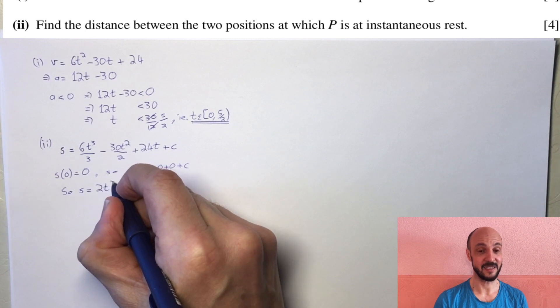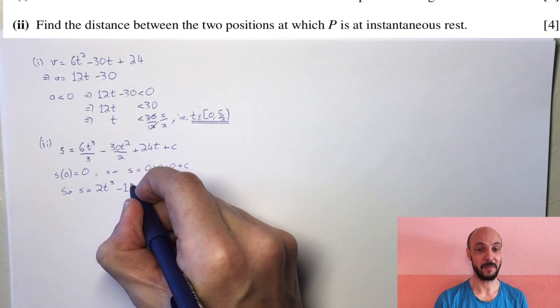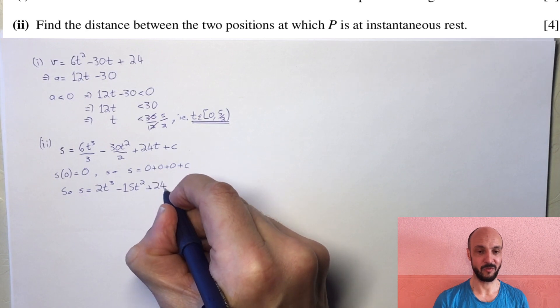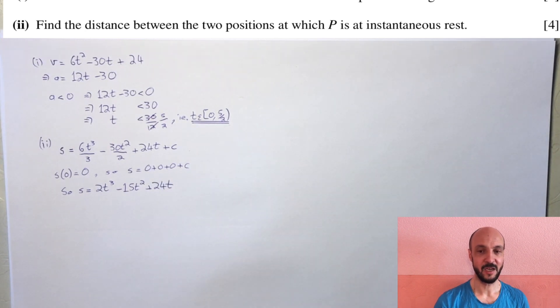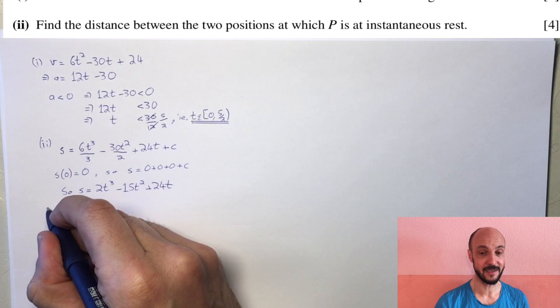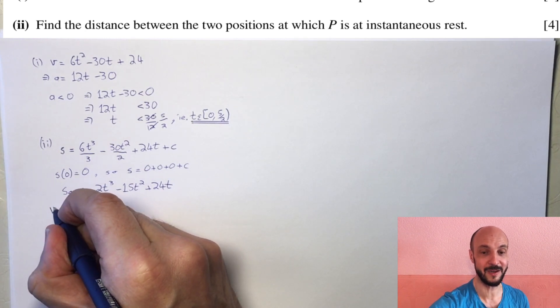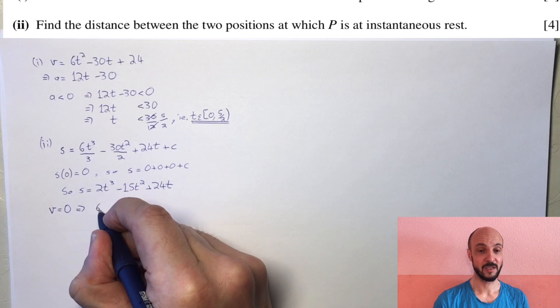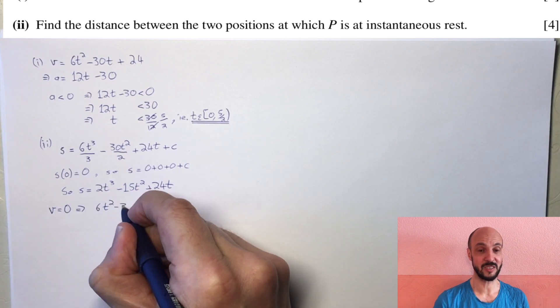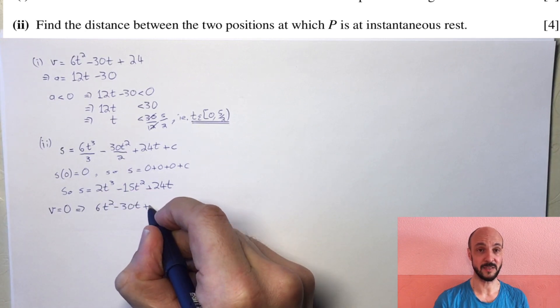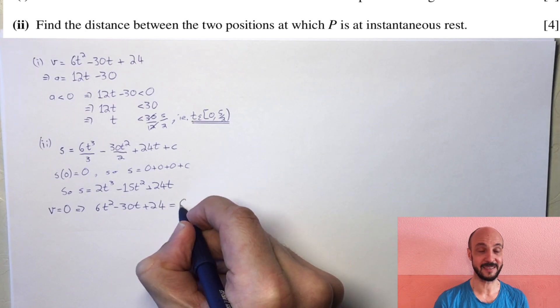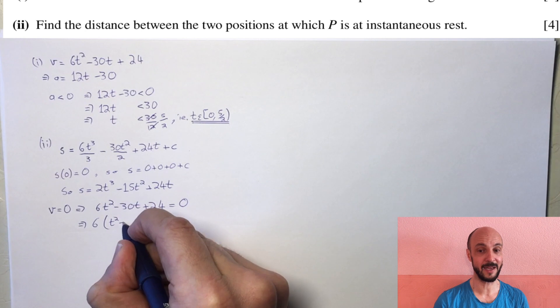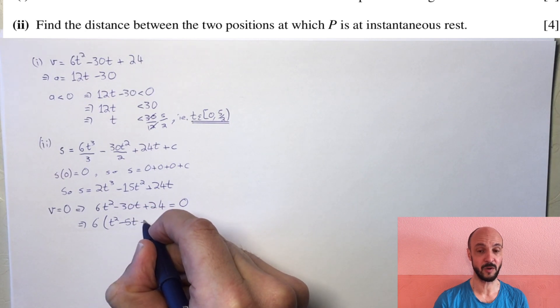So s equals 2t cubed minus 15t squared plus 24t. To find when it's at instantaneous rest, v equals 0, so 6t squared minus 30t plus 24 equals 0. Dividing by 6 gives t squared minus 5t plus 4 equals 0.